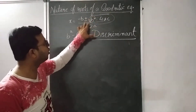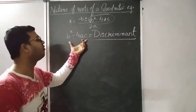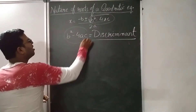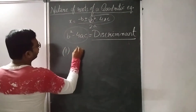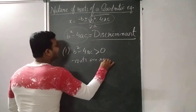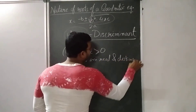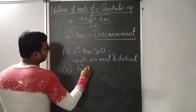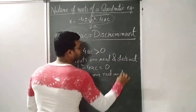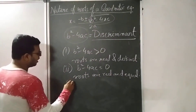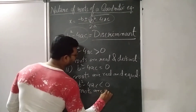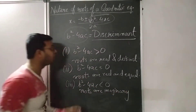There are three conditions. The first condition: if B² − 4AC > 0, then the roots are real and distinct — distinct means separate, different values. The second condition: if B² − 4AC = 0, then the roots are real and equal. The third condition: if B² − 4AC < 0, then the roots are imaginary, or you can say roots are not possible. These are the three conditions in the Nature of Roots.